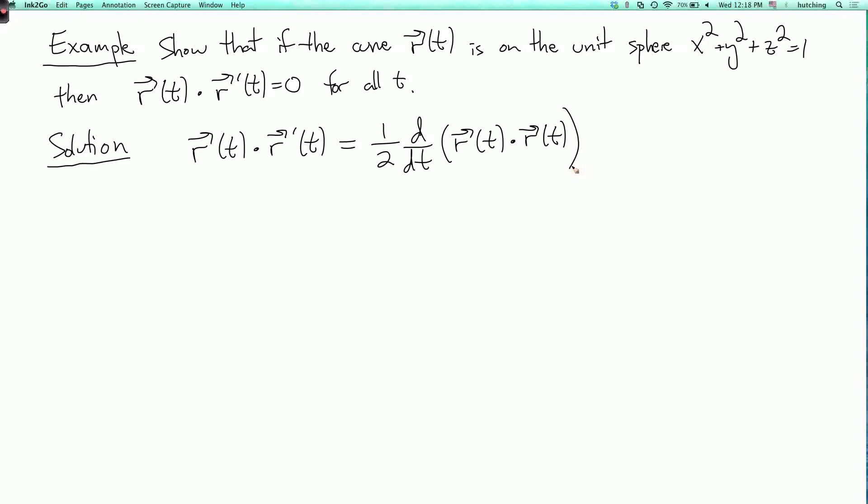Now, remember that any vector dot product with itself is the length of the vector squared. So this is one-half the derivative of the length of r of t squared.